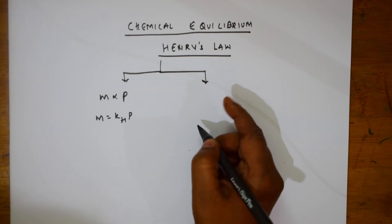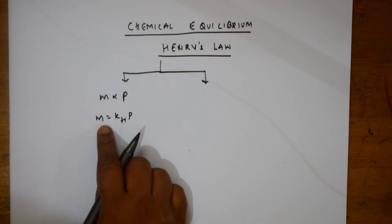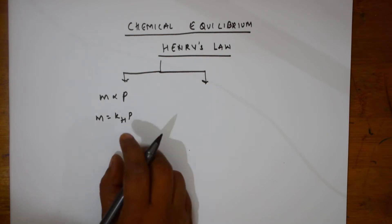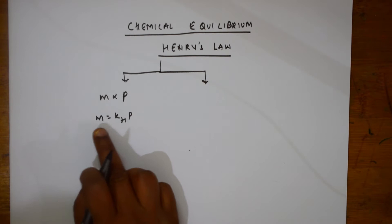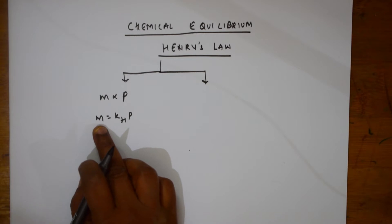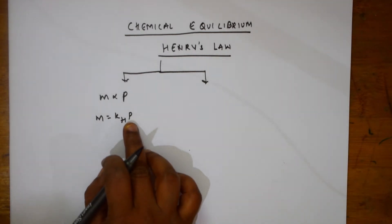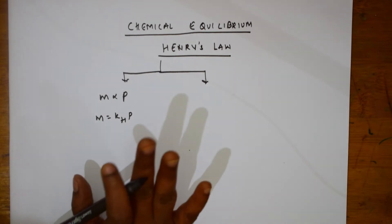Here, m is the mass of the gas dissolved per unit volume of the solvent, and p is the pressure of the gas in equilibrium with the solution. To restate: mass of the gas dissolved per unit volume of the solvent at a given temperature, and p is the pressure of the gas in equilibrium with the solution.